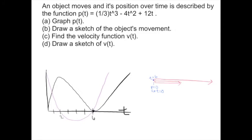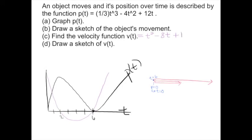Here's a brief summary: we were given a position function. First we factored to graph it and got the position graph. Then we drew a sketch of the object's movement — a more physical representation showing the object moving right, then left, then right. Next we found the velocity function using the power rule, and finally we plotted the velocity function by factoring it.